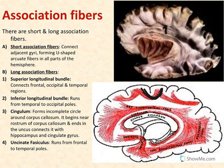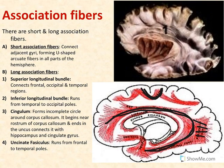The long association fibers have four bundles inside the brain. The first is the superior longitudinal bundle, which connects the frontal, parietal, occipital, and temporal lobes of the brain. The inferior longitudinal bundle runs on the tentorial surface of the brain and connects between the temporal and occipital lobes only.